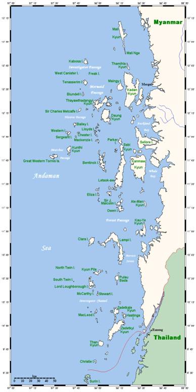An archipelago, sometimes called an island group or island chain, is a chain, cluster or collection of islands, or sometimes a sea containing a small number of scattered islands.